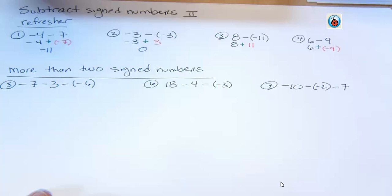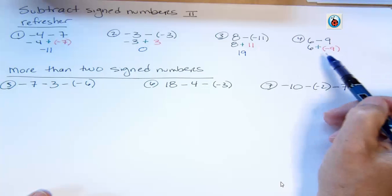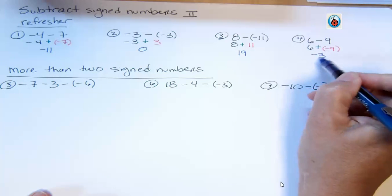Number three, you have all positives. You have eight and eleven, which is nineteen. And number four, you have more negatives than you do positives, so you have more negatives, which is negative three.